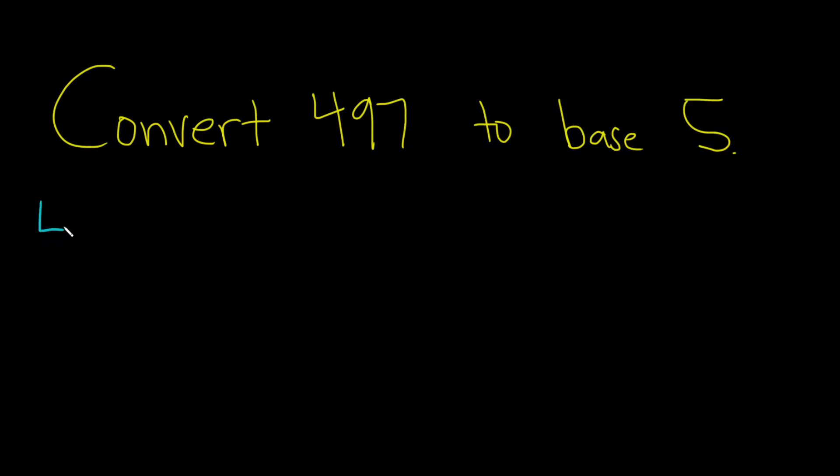The first step is you take 497 and divide it by 5. We care about the remainder. If you use a calculator and type it in, you get 99.4. That means 5 goes into 497 99 times. If you do 99 times 5, you get 495.